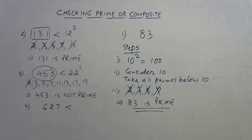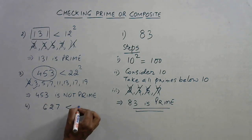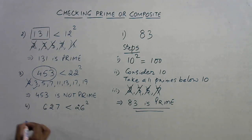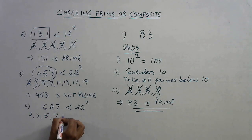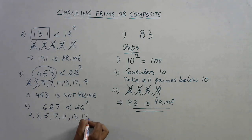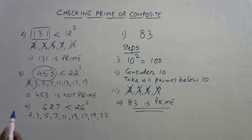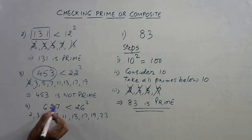Now see, 25 square is 625, so 26 square, this is what I require. Now list down all primes below 26: these are these numbers.